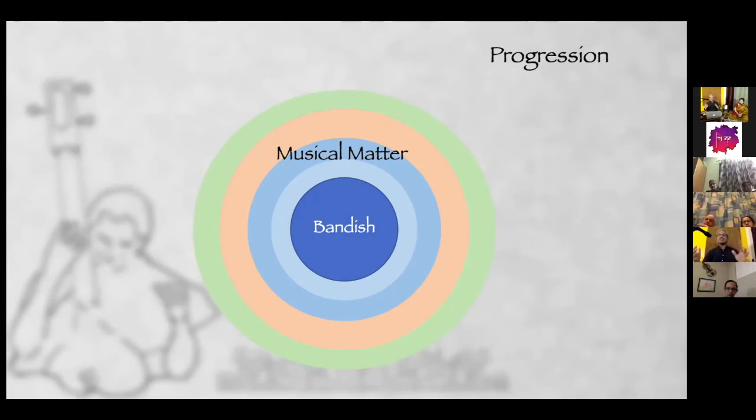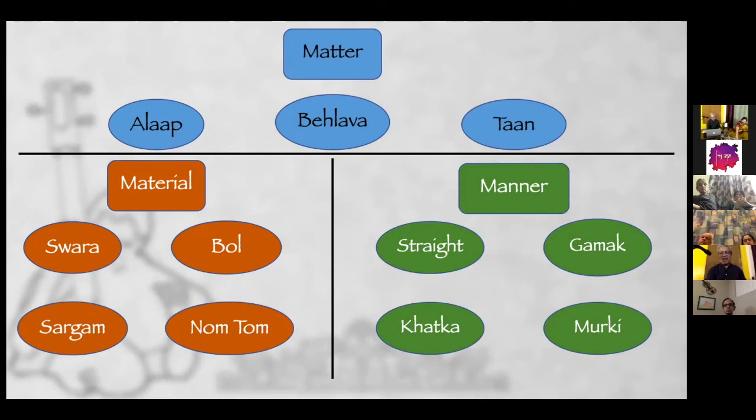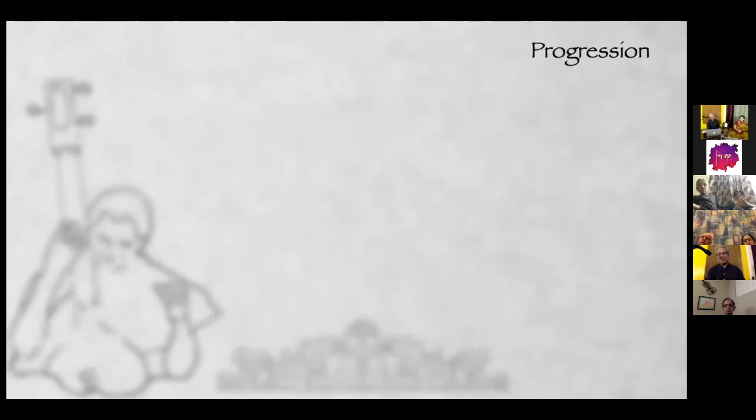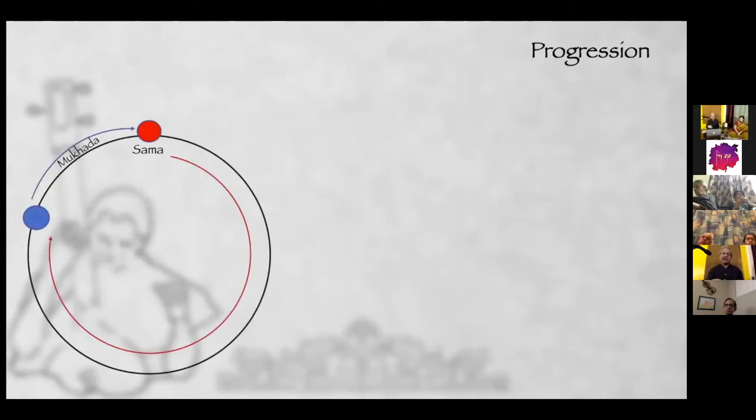And understanding all this is really appreciation. So what exactly happens in a performance? Imagine now we played about four or five Avaratans of the Bandish. So what is happening is you have one Avaratan which has the Sama and which you develop from the Sama to the Mukhda and come to the Sama.